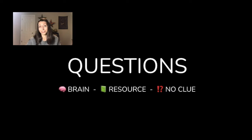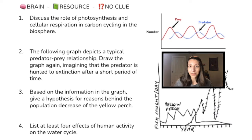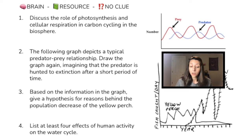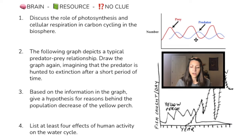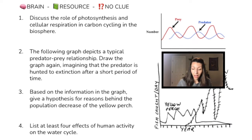Don't peek ahead if you're using the slides because the answers are on the slides. First question: discuss the role of photosynthesis and cellular respiration in carbon cycling in the biosphere. Question two: the following graph depicts a typical predator-prey relationship — draw the graph again imagining that the predator is hunted to extinction after a short period of time. Question three: based on the information in the graph, give a hypothesis for reasons behind the population decrease of the yellow perch. And lastly, list at least four effects of human activity on the water cycle. Take a moment to pause the video and try to answer these questions.